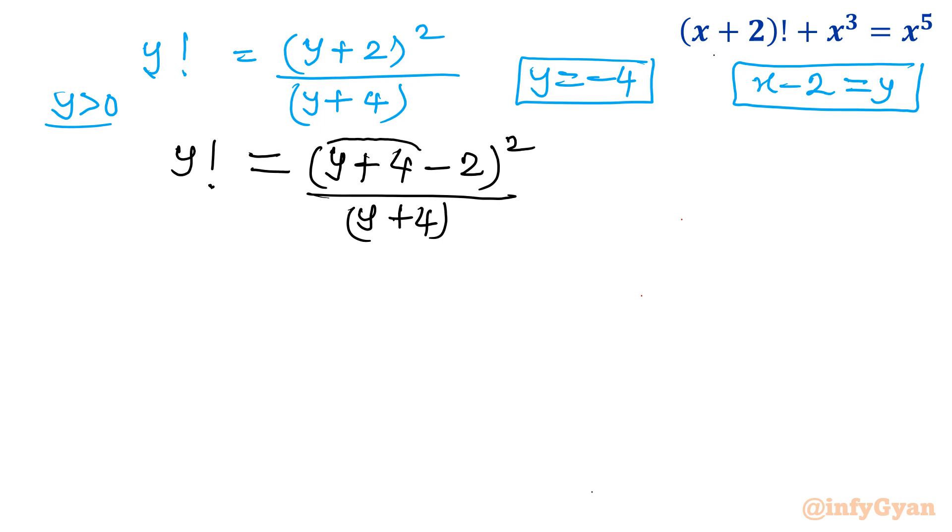Now I will consider this term as a, this term as b. So a minus b whole squared. So if I will write, then I will write a squared, so y plus 4 whole squared plus b squared, 2 squared is 4, minus 2ab. So minus 4 times y plus 4 divided by y plus 4.